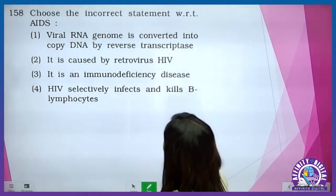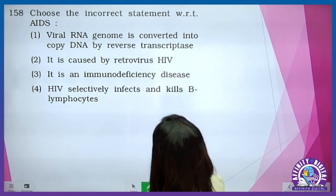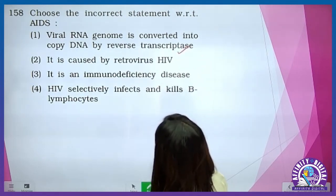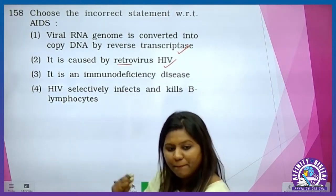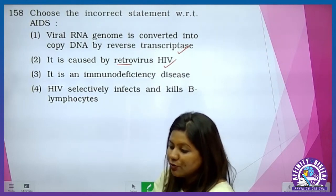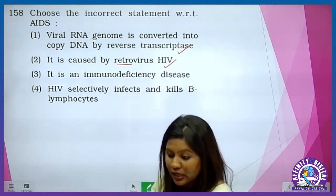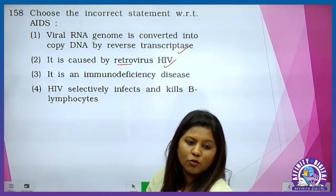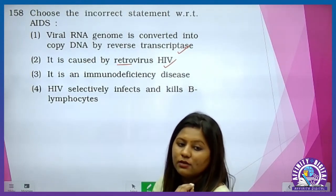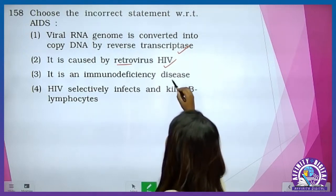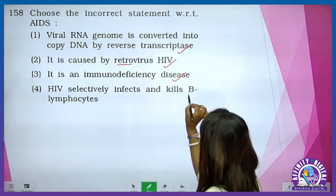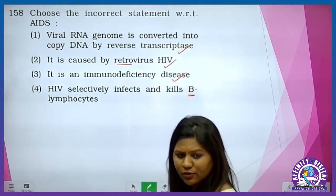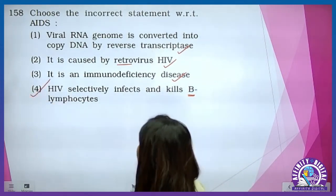Choose the incorrect statement with respect to AIDS. Viral RNA genome is converted into copy DNA by reverse transcriptase — correct. It is caused by retrovirus HIV — retro ka matlab hota hai going back — kyunki uske paas RNA hota hai as a genetic material, aur RNA vaapas se reverse central dogma karke DNA banata hai. It is an immunodeficiency disease — correct. HIV selectively infect and kills B lymphocytes — no, it doesn't kill B lymphocytes, it kills T lymphocytes and also macrophages. So this is the incorrect option.